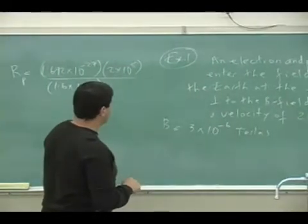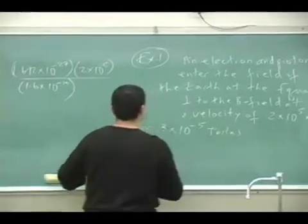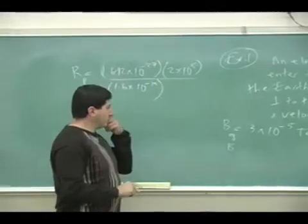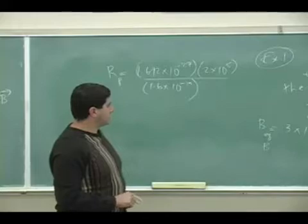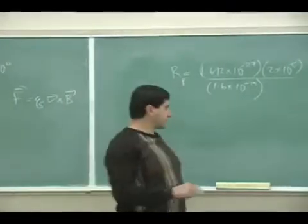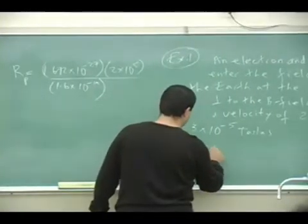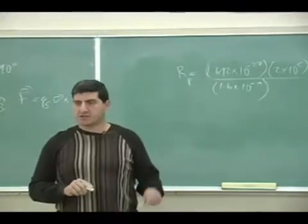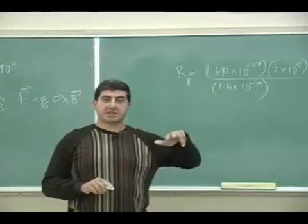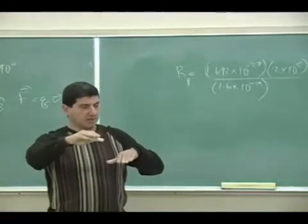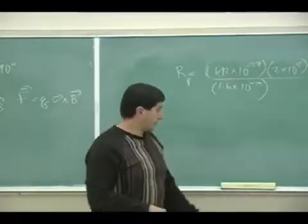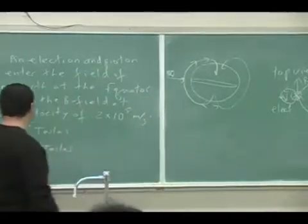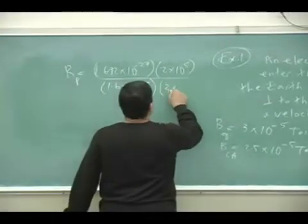Roughly speaking at the equator it's probably about 3 times 10 to the minus 5 teslas. At the latitude of LA it's about 2.5 times 10 to the minus 5 teslas because it's stronger at the equator. At the equator the magnetic field is parallel to the surface of the Earth.